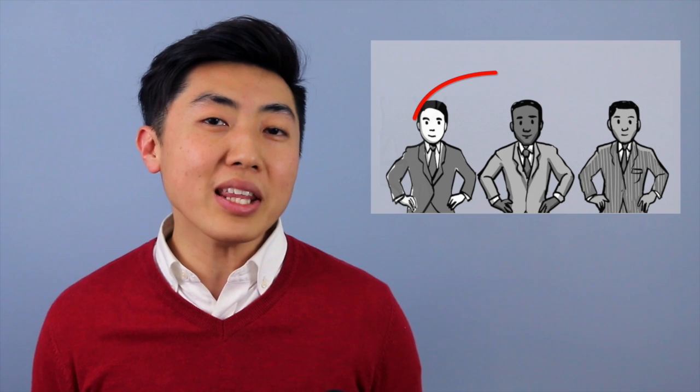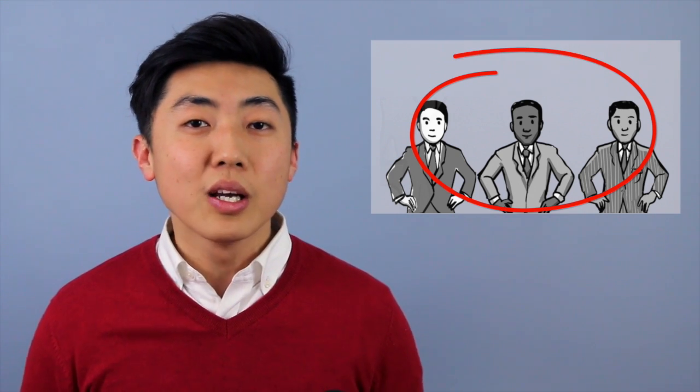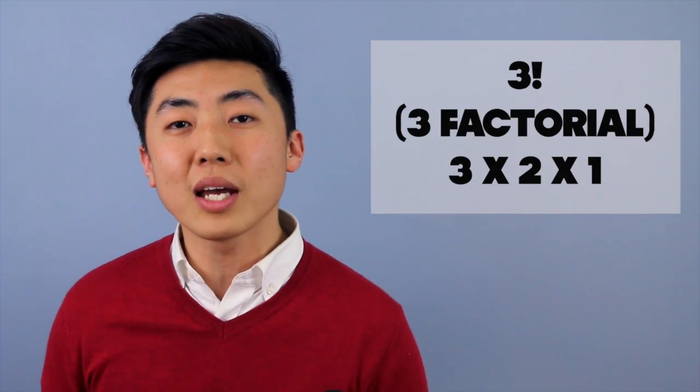And it turns out that the math is actually pretty straightforward. However many things there are, in this case three, we're going to do three factorial. And factorial really just means three times two times one.